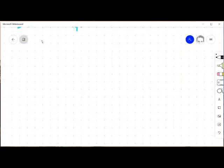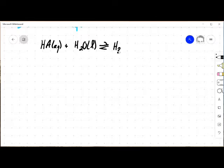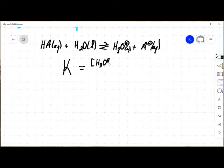Again, let's start from the same place. I've got HA plus water gives me H3O plus and A minus. The position of this equilibrium should tell us a lot about the character of that particular weak acid. So I can write an equilibrium constant expression. K is equal to H3O plus at equilibrium times A minus at equilibrium all over HA.